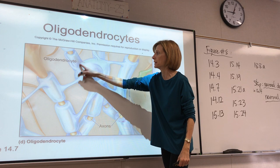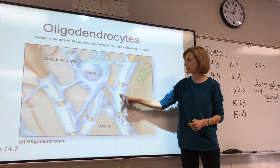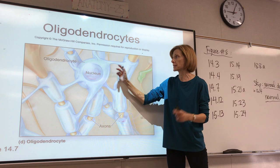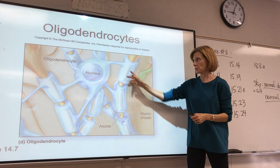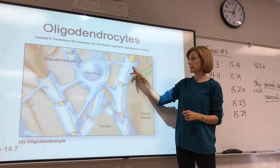This is an oligodendrocyte — this is its cell body here. Notice these cells have processes that reach out and wrap around axons. We have a bunch of axons passing by, and this one oligodendrocyte is forming parts of the myelin sheath on these different axons. It is literally wrapping its membrane around the axons so that the axon is insulated.